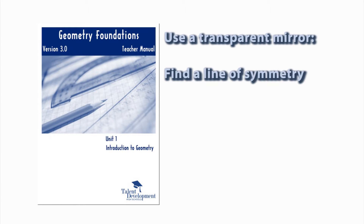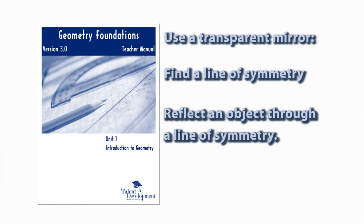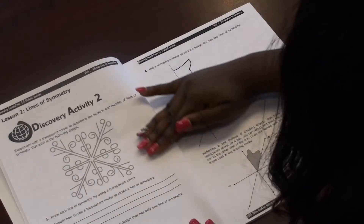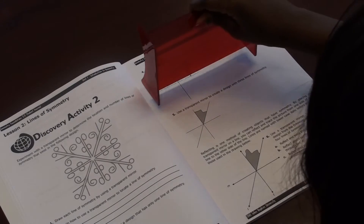In Unit 1, Lesson 2, students will use a transparent mirror to find both a line of symmetry and reflect an object through a line of symmetry. Students should lay their journals out as flat as possible so that there is no warping of the image reflected through the transparent mirror.